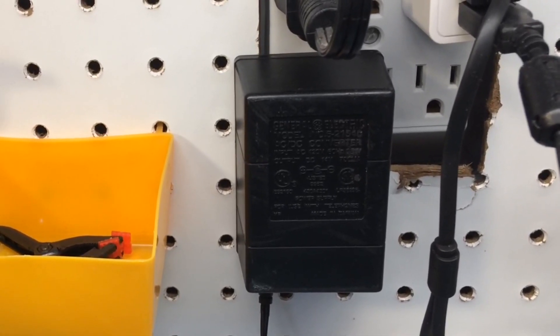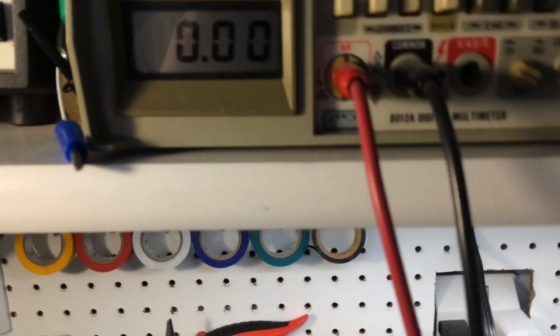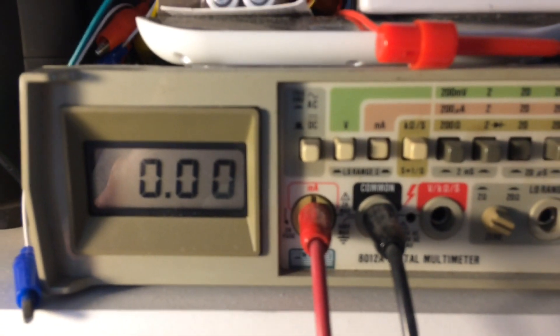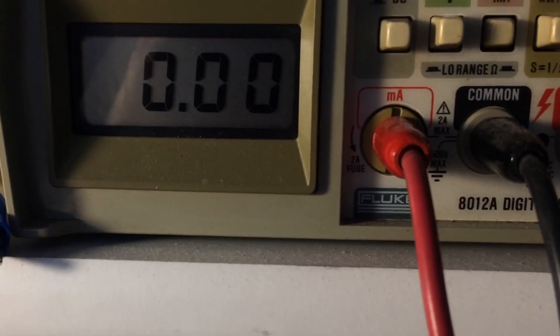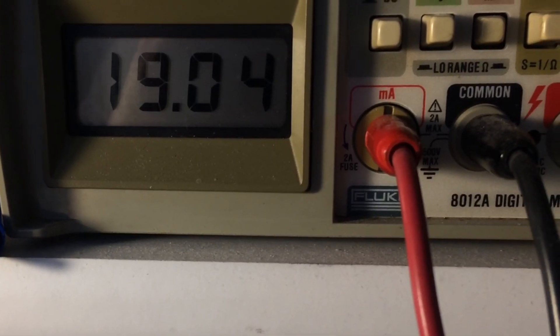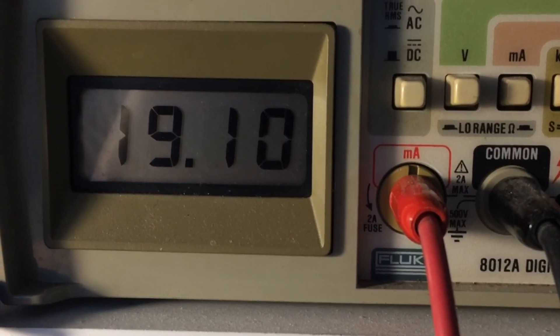Using an AC to DC power supply, we'll look at current here on the meter. Let's activate the coil. You can see I'm at about 19 milliamps.